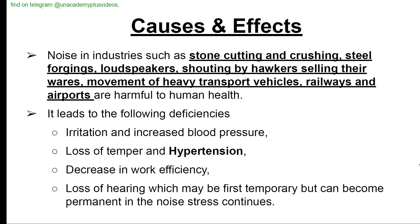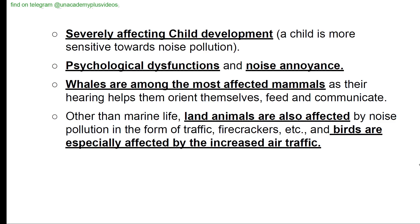Causes and effects: industrial noise from stone cutting and crushing, steel forging, loudspeakers, shouting by hawkers, heavy transport vehicles, railways, and airports is harmful to human health. Effects include: increased blood pressure, loss of temper and hypertension, decreased work efficiency, temporary or permanent hearing loss, severe effects on child development (children are more sensitive to noise), and psychological disturbances. Whales are among the most affected mammals as their hearing helps them orient, feed, and communicate. Land animals are affected by traffic and firecrackers, and birds are especially affected by increased air traffic.